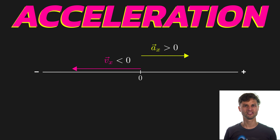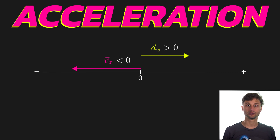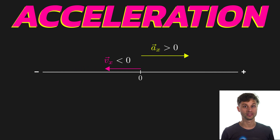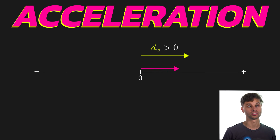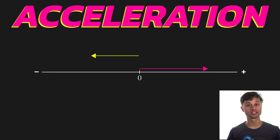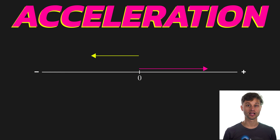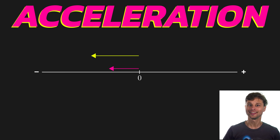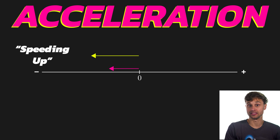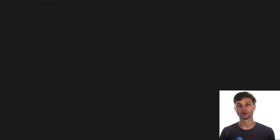This is an important property: if the acceleration vector points in a different direction than the velocity vector, the acceleration is pushing the velocity in another direction. In 1D, it can be thought of as pulling the velocity in the opposite direction it wants to go, or pushing it in the same direction. If velocity is positive and acceleration is negative, you get deceleration. But if both velocity and acceleration are in the negative direction, that is still speeding up — just in the negative direction.